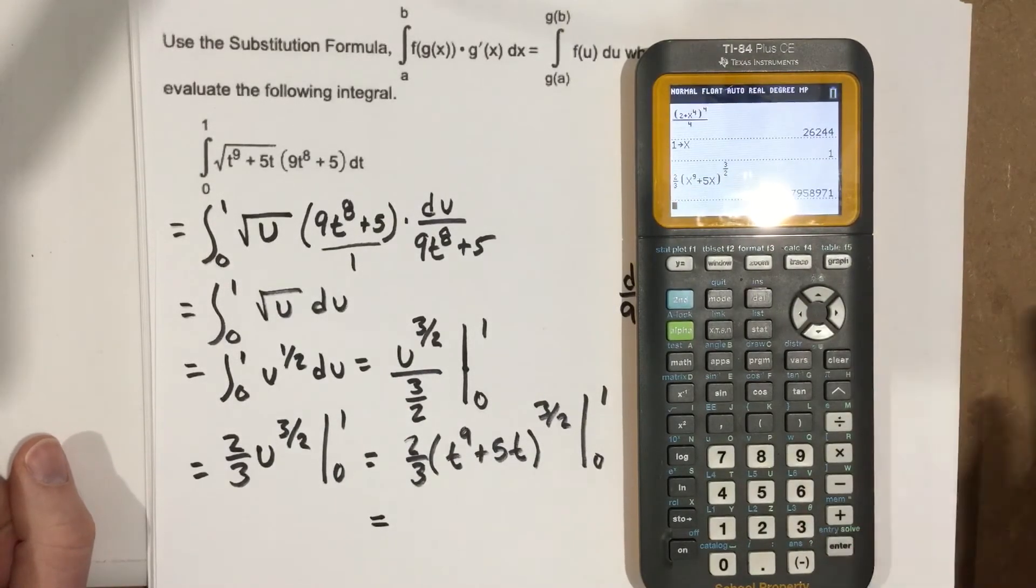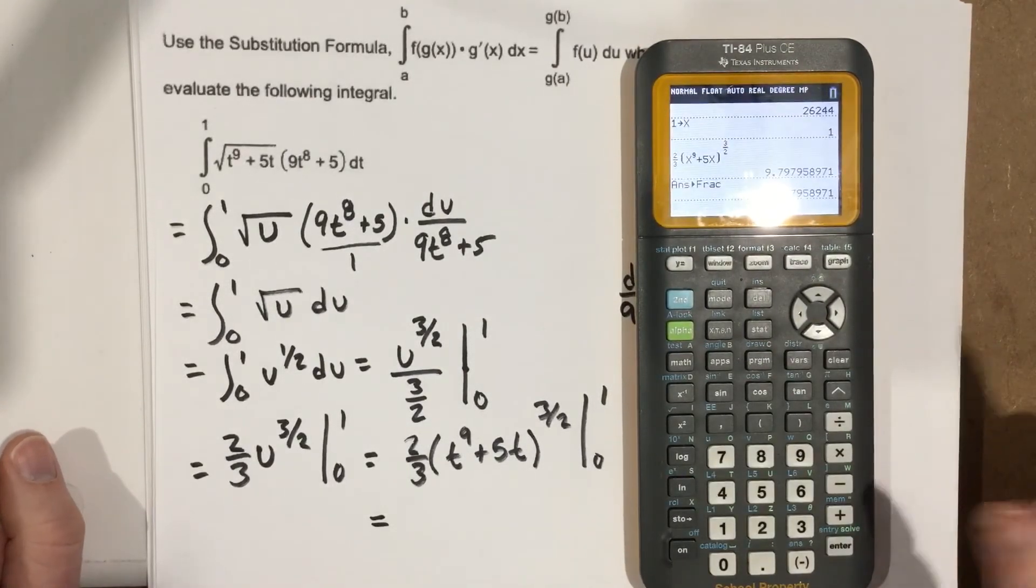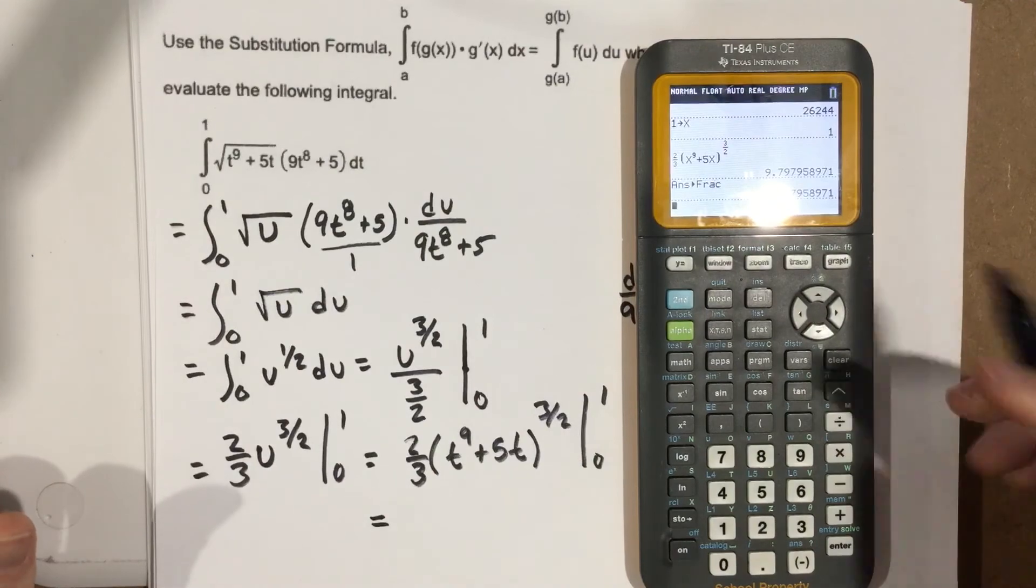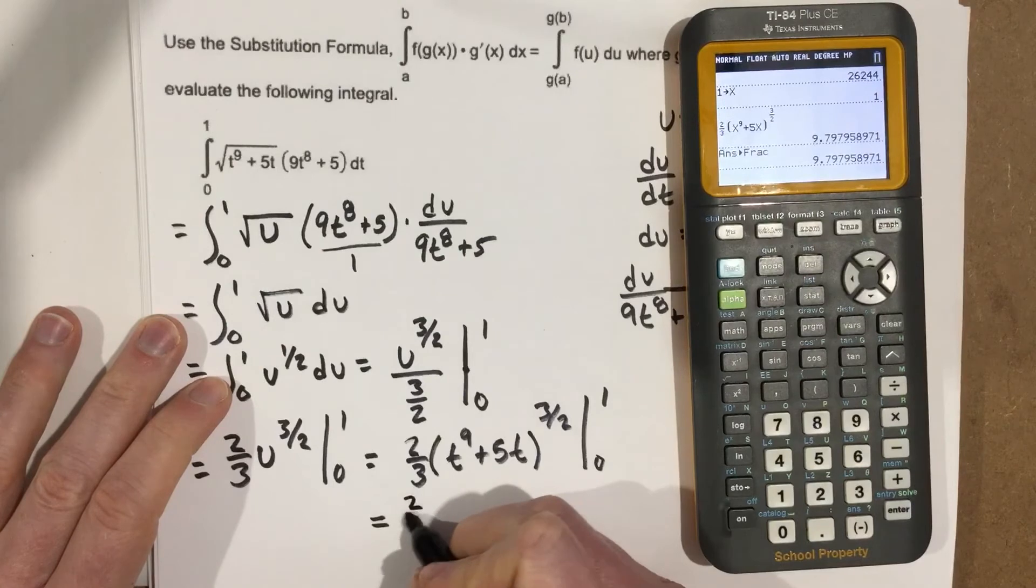Hit enter. It tells me that's 9.79. Let's get a fraction out of that. It doesn't give us a fraction. So it's 9.79. Now it asks for an exact answer here. So if it's asking for an exact answer, it's probably not one that's 9.79 number. So let's go ahead and write this out then. This would be 2/3.